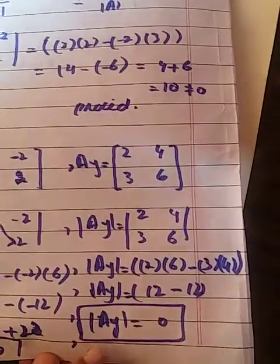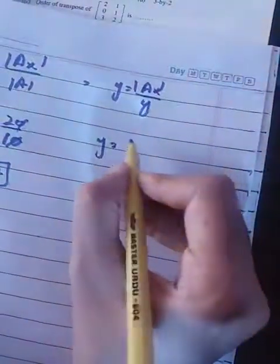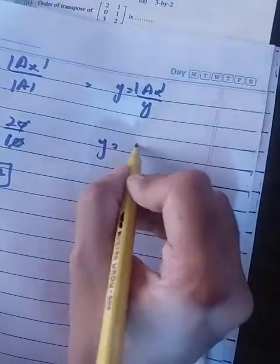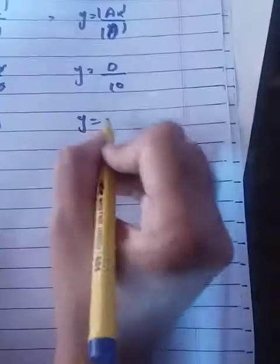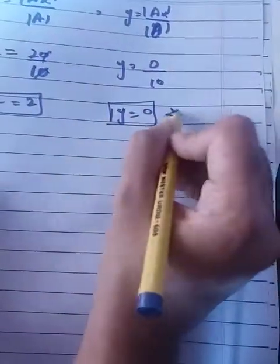And for |Ay| mod, the value is 0. |Ay| mod value is 0, and |A| mod value is 10. So 0 divided by anything becomes 0. This is your answer.